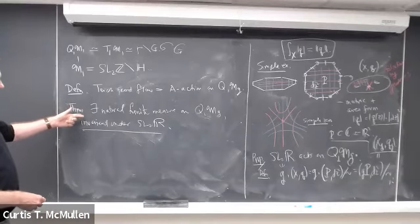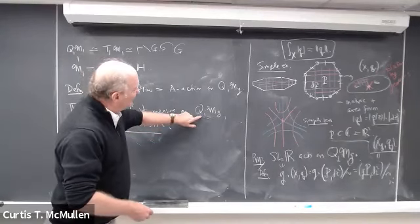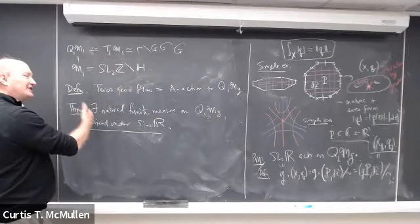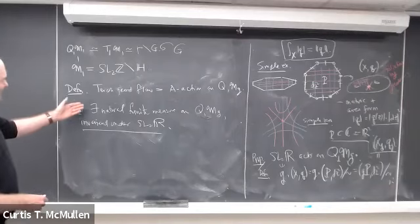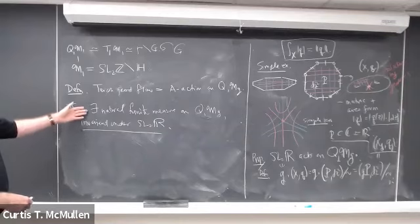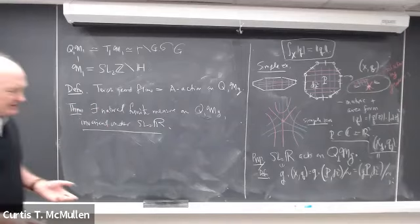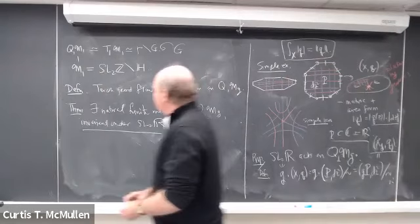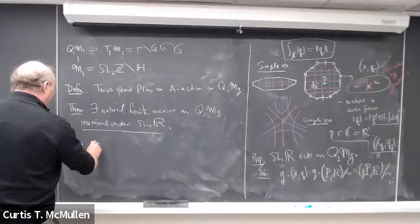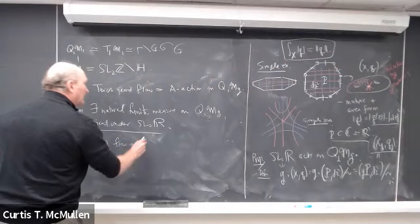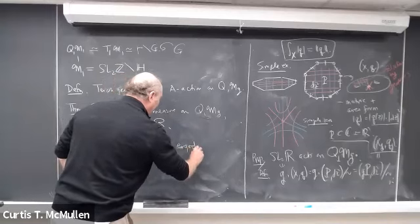The upshot is that for general Riemann surfaces, Q¹(M_g) plays the role of the unit tangent bundle over moduli space. It has not just a geodesic flow but also a horocycle flow, and they combine to give an SL(2,R) action. This flow can be analyzed from the perspective of ergodic theory because it has a natural finite measure. We can ask: is the geodesic flow ergodic? The next theorem: the geodesic flow on Q¹(M_g) — i.e., the A-action — is ergodic.